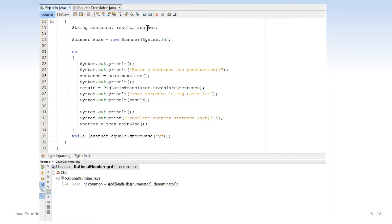We declare string sentence, result, and another. Another is simply used for the do-while loop. We declare a new scanner object named scan, and this scanner object is connected to the input device, the keyboard. And then we simply enter a do-while loop. System.out.println prompts the user to enter a sentence with no punctuation. And then sentence equals scan.nextLine. We will solicit an entire sentence and store it in the string named sentence. Print a blank line.